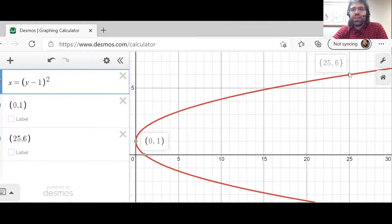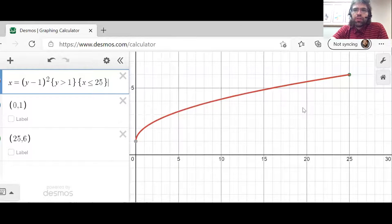Until we reach this point, 25, six, at which point the interval has ended. So of the curve we got by eliminating the parameter, only this part of it is actually on the graph.